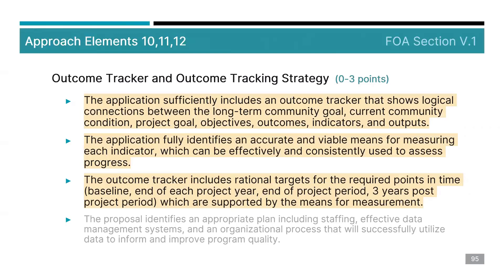Let's start by taking a look at the elements. The first three elements under Outcome Tracking are all relatively connected. The first one is the application sufficiently includes an Outcome Tracker that shows logical connections between those components. The next one is the application fully identifies an accurate and viable means for measuring each indicator, which can be effectively and consistently used to assess progress.